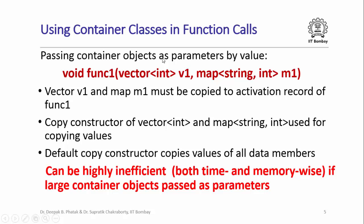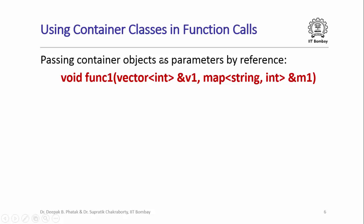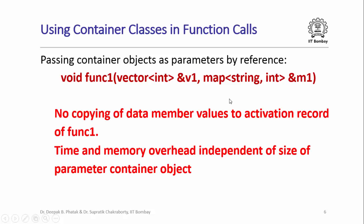What could be an alternative way of passing container objects as a parameter? We could pass them by reference. Here is an alternative form of the same function func1, where the parameters v1 and m1 are passed by reference. When we pass parameters by reference, basically pointers to those parameters are passed to the called function, so there is no copying of data member values to the activation record of func1. This is far more efficient in general, and the time and memory overhead are actually independent of the size of the container objects being passed.